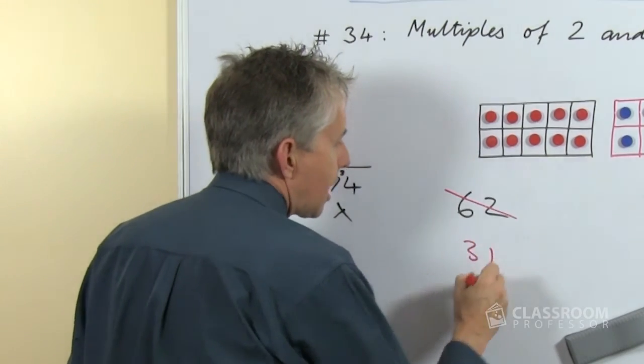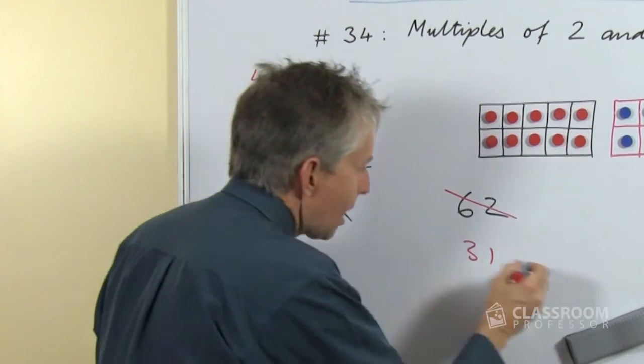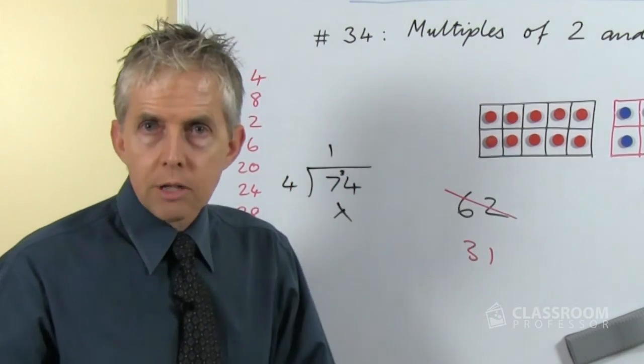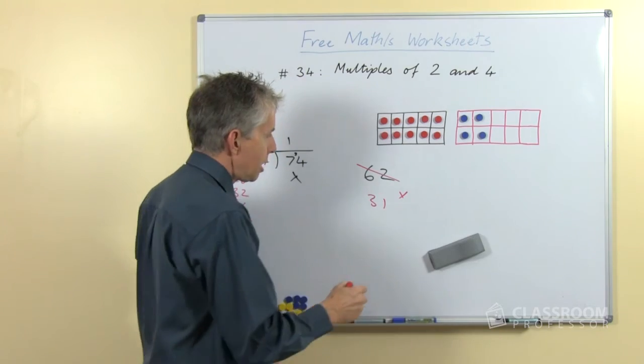Divide that by 2 or take half of it, it's 31. Can we get half of 31 as a whole number? No we can't, so that's not a multiple of 4 either.